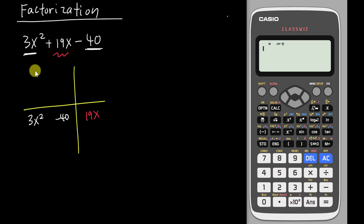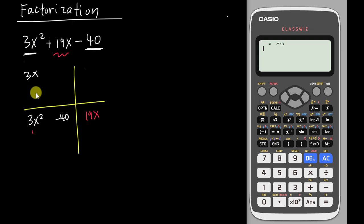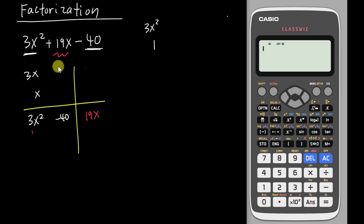For the multiplication zone, think about what number multiplied by another number gives 3x squared. Since 3 is a prime number it's easy — it's basically 3x multiplied by x. Some students might say 3x² times 1, but we try to avoid that and make both terms have x.